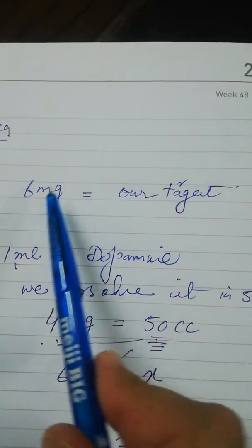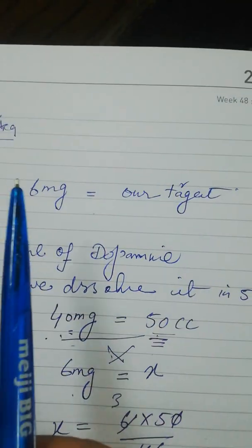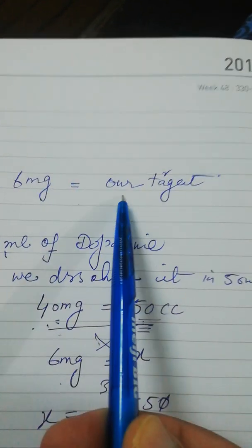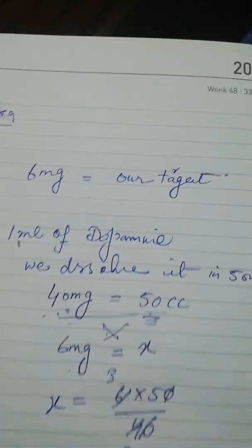Let's come to the target. The target is 6 mg of dopamine per hour we have to deliver to the patient.